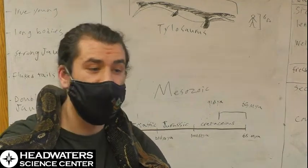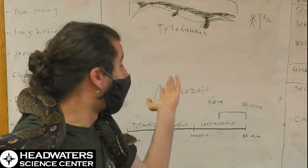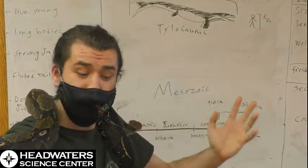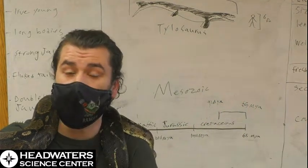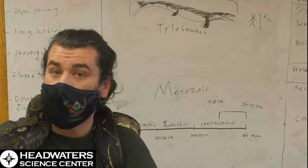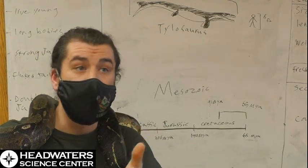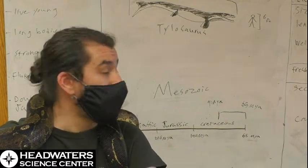Mosasaurs also ranged in size, filling all sorts of niches. So these essentially big aquatic lizards did quite a lot. Unfortunately, at the end of the Mesozoic, they were hit by that same mass extinction that wiped out the non-avian dinosaurs and most of the other marine reptiles.